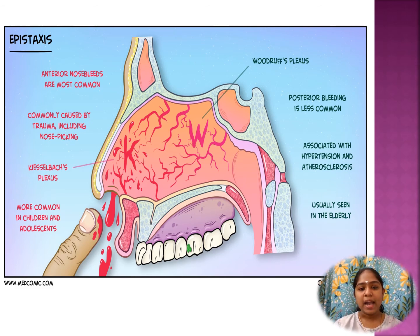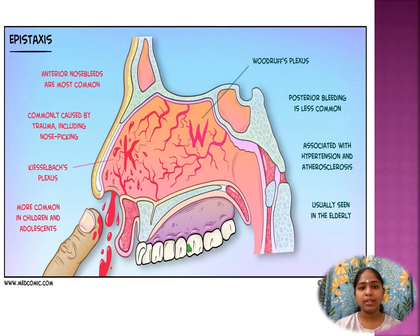Anterior nosebleed is more common in children and adults due to the picking of the nose. Posterior bleeds are commonly seen in elders, associated with hypertension and atherosclerosis.